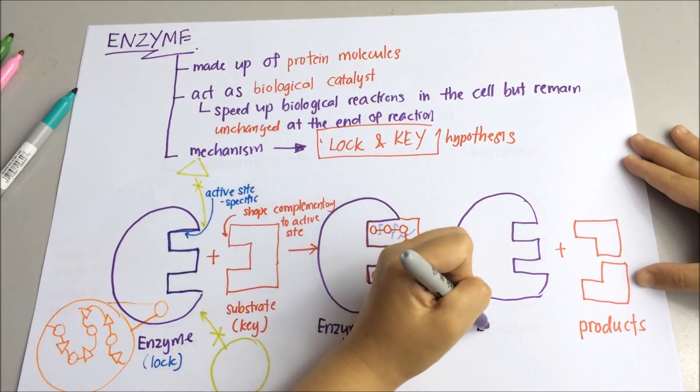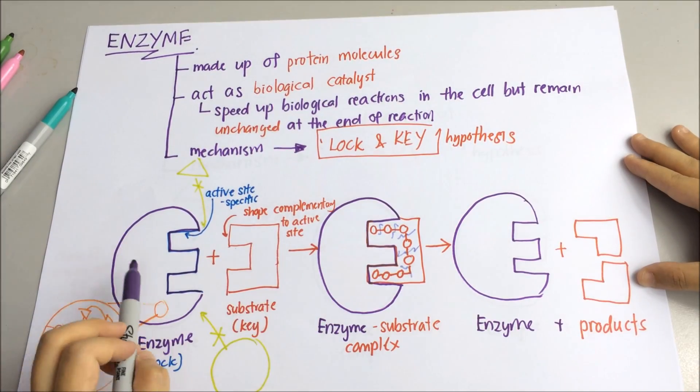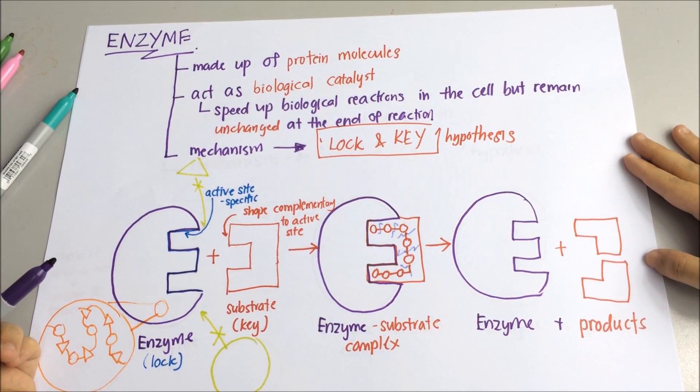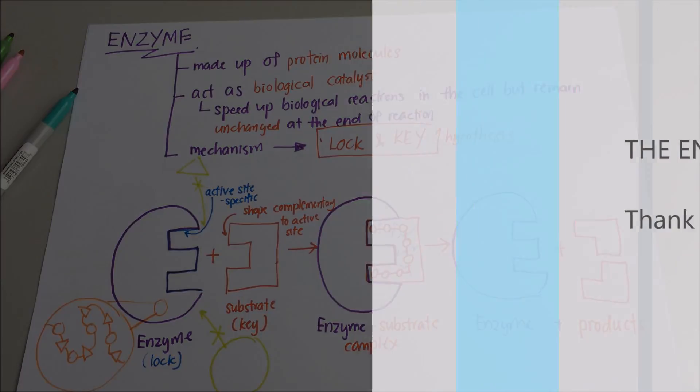As you can see here, the structure of enzyme molecules still remains unchanged and it can still bind with other substrate molecules for other reactions. That concludes the lock and key model in enzyme action. Thank you.